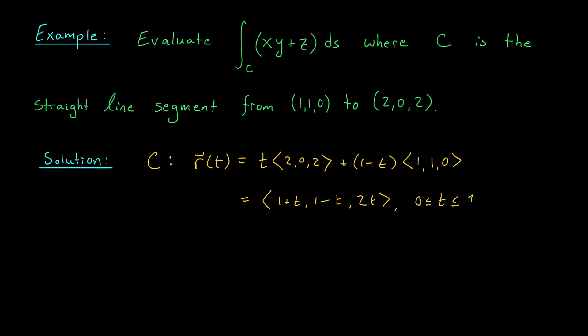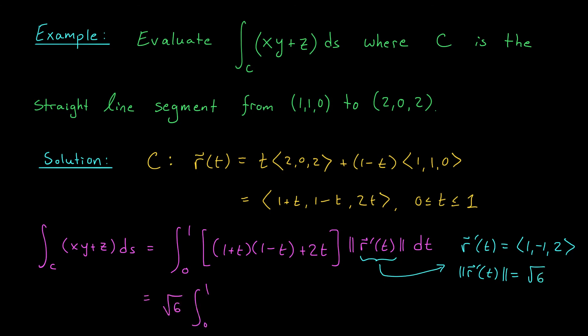This means that our line integral over C of xy plus z ds is really the integral from 0 to 1. I'm going to rewrite x, y, and z in terms of the entries of r of t to get (1 plus t)(1 minus t) plus 2t. And then the remaining part of the integral, that nasty square root, I'm again going to write simply as the norm of r prime t dt. Now, we can compute r prime using the definition of r. We find that r prime of t is simply (1, minus 1, 2), and this is a vector of norm root 6. So my integral becomes root 6 times the integral from 0 to 1 of, if I expand this, I get 1 minus t squared plus 2t dt. Now, from here, I know you can fill in the details. You should get a final answer of 5 root 6 over 3.